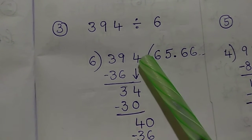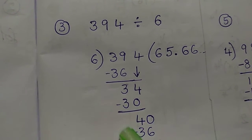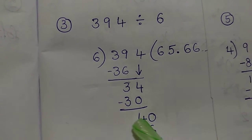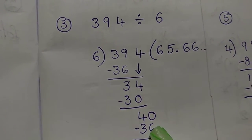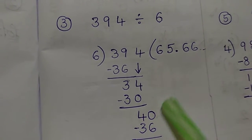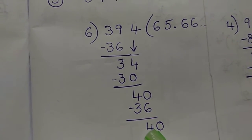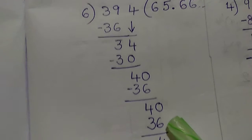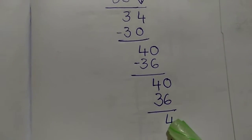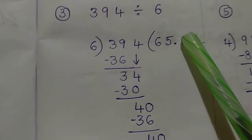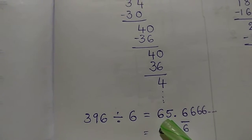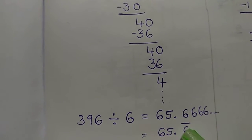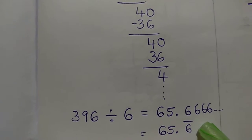So we have 40. Now 6 times 6 is 36. So we have 40 minus 36, which gives 4. We have 0 here. Since this is the same remainder repeating, we have 4 again. So we have 65.66667. That means we have 65.666, with 6 repeating — written as 65.6 bar.